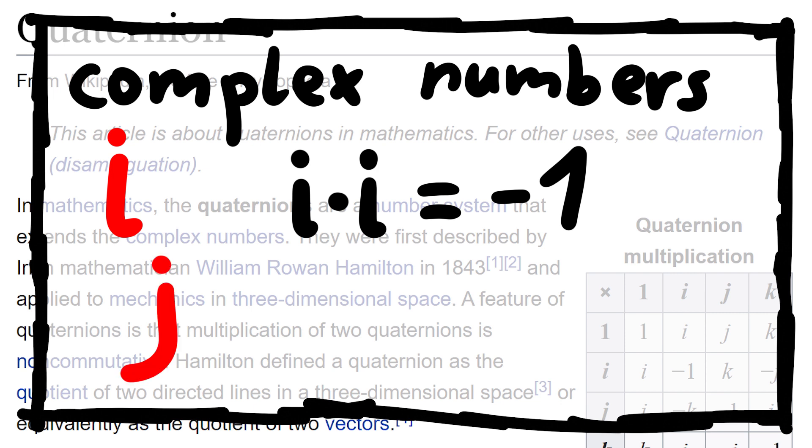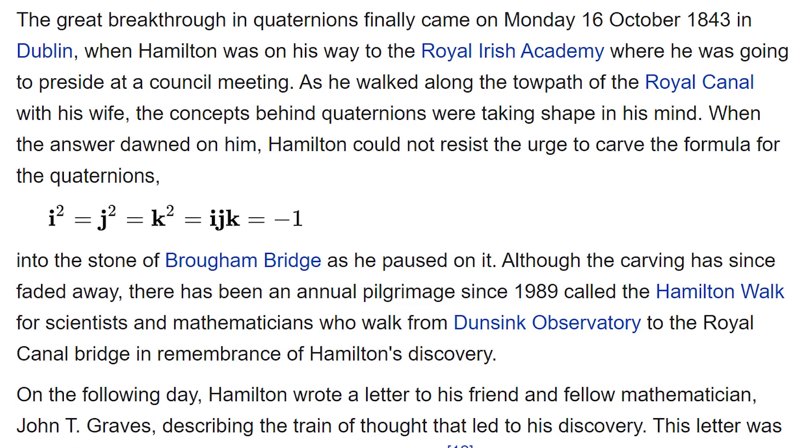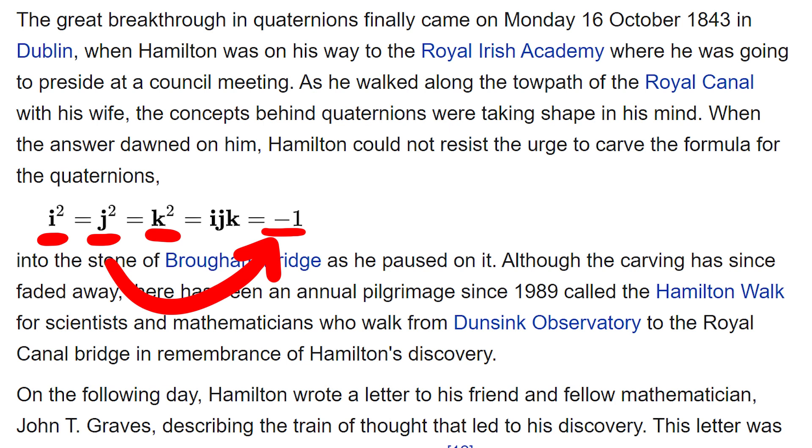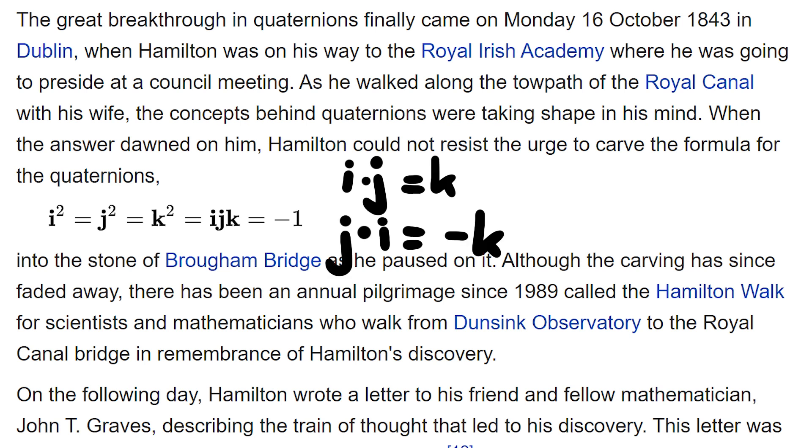And with quaternions, we extend it on this and add even more weird numbers. And you can see some of the properties here in the multiplication of the basis elements. All of them squared are actually minus 1. But j, k and i are not the same. In fact i times j is k, but j times i is minus k. Absolute madness.